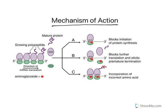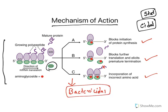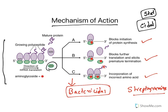Most protein synthesis inhibitors stop bacterial growth and are considered bacteriostatic agents, but two classes — aminoglycosides and streptogramins — are bactericidal in nature; they will kill the bacteria. Aminoglycosides are bactericidal agents. They bind with 30S ribosomes and cause three effects: they block initiation of protein synthesis, they block further translation and cause premature termination, and they incorporate an incorrect amino acid. The effect of all these is massive protein synthesis inhibition leading to bactericidal action.